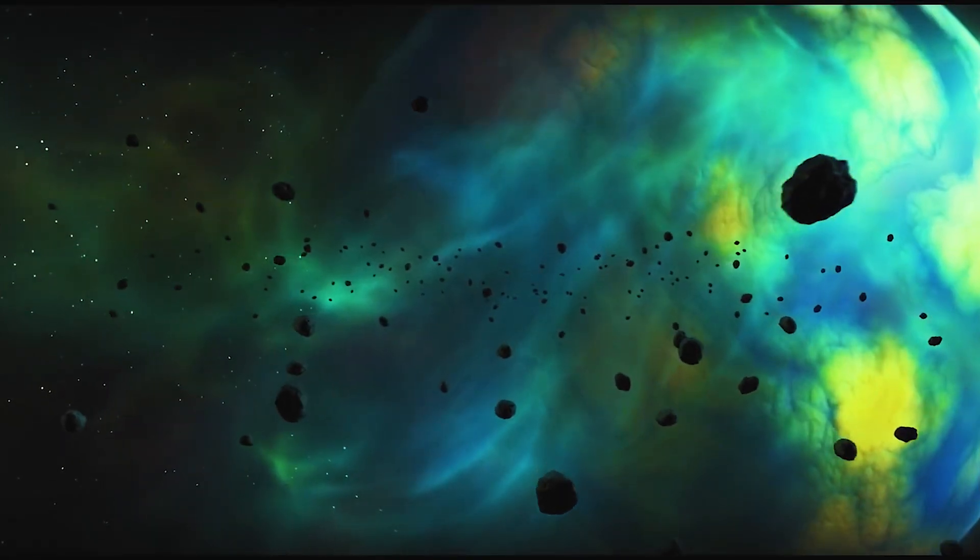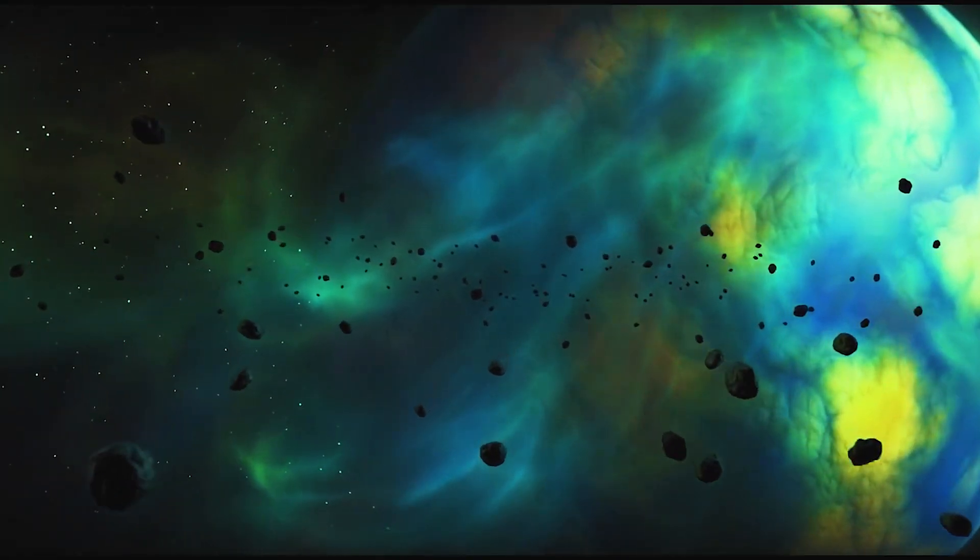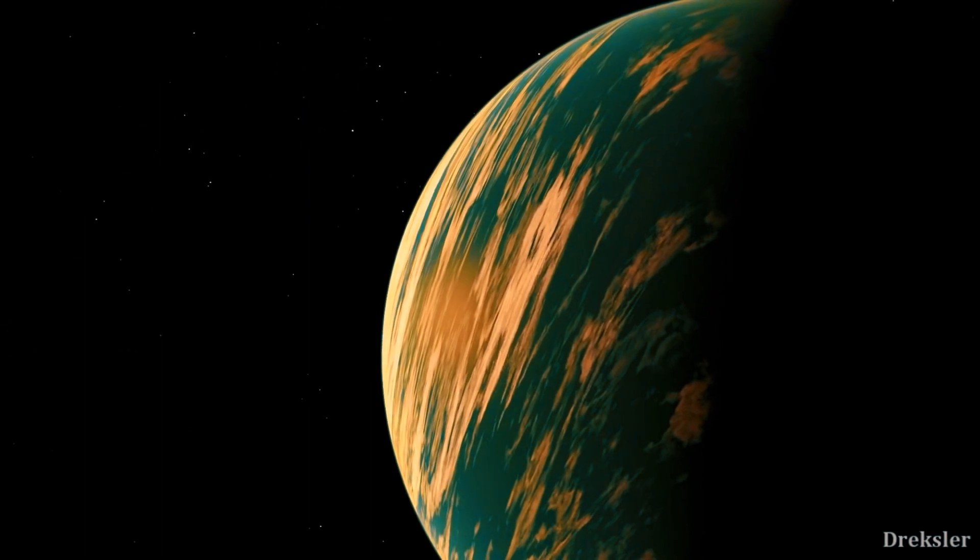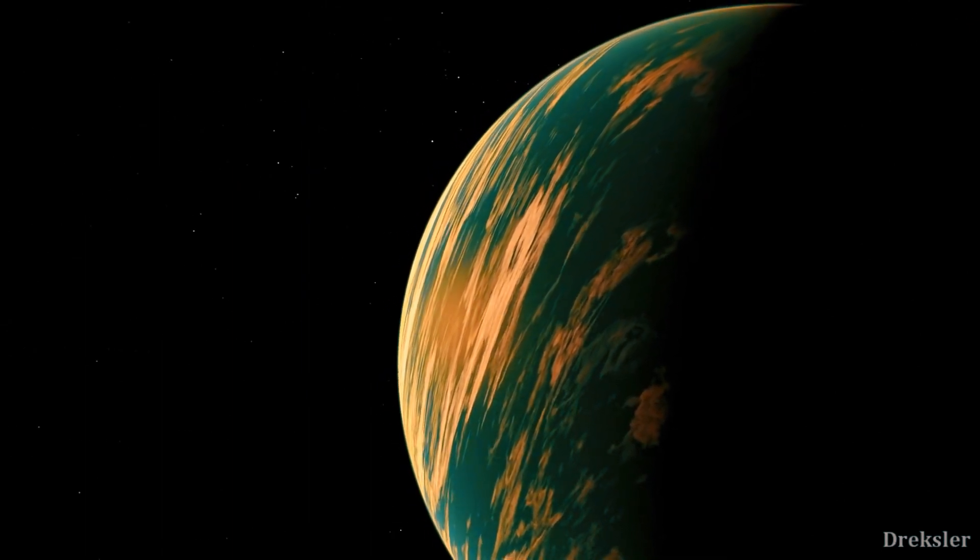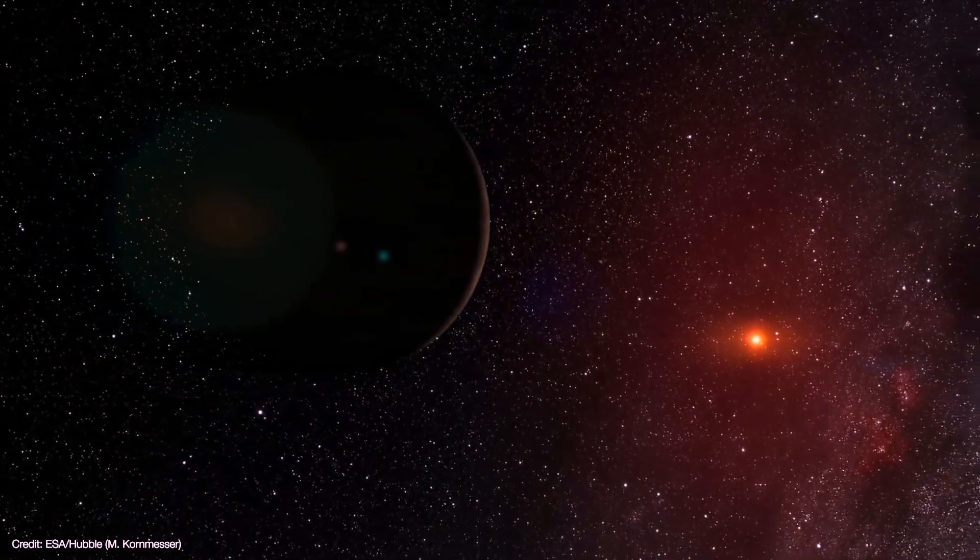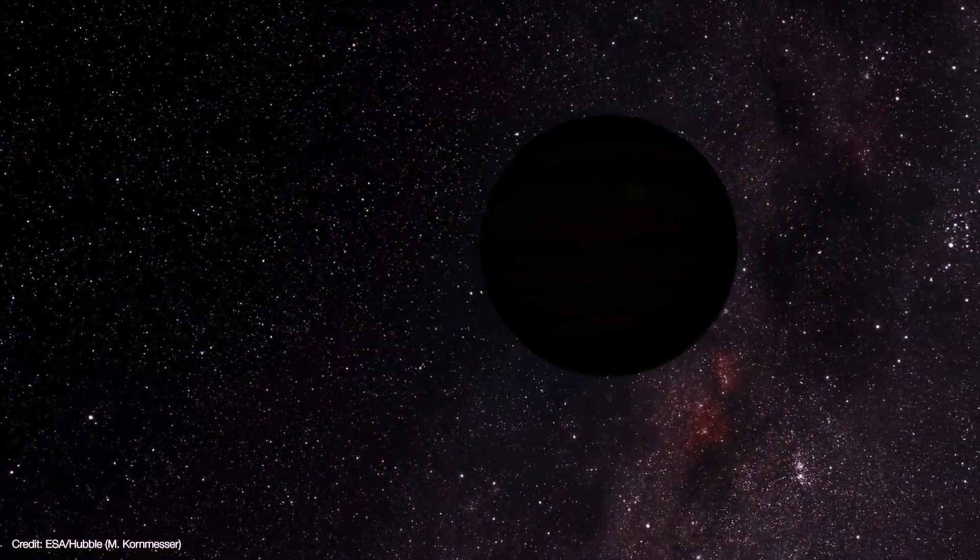The measured planetary mass and bulk density are suggestive of the planet having a rocky core surrounded by a volatile-rich envelope. As per the reports, a year on this exoplanet will last only for a span of 11 days.